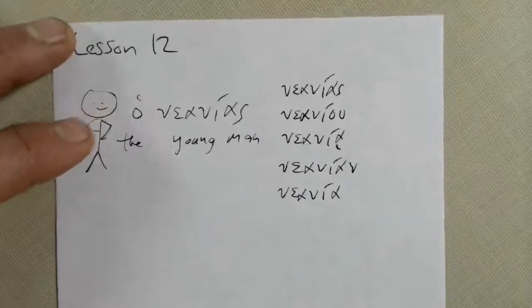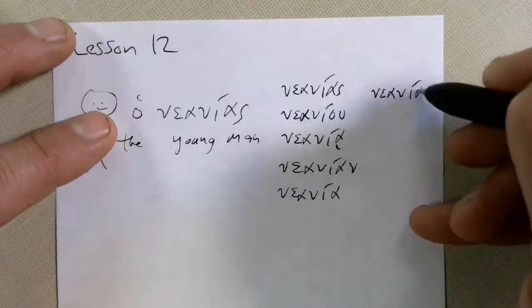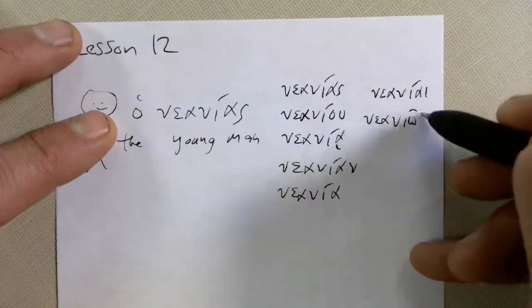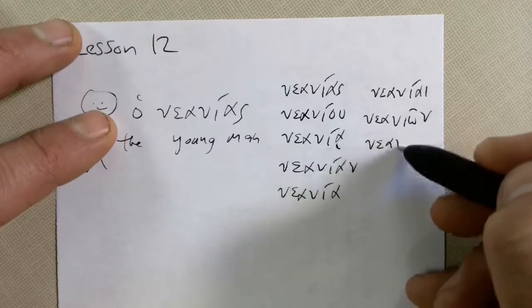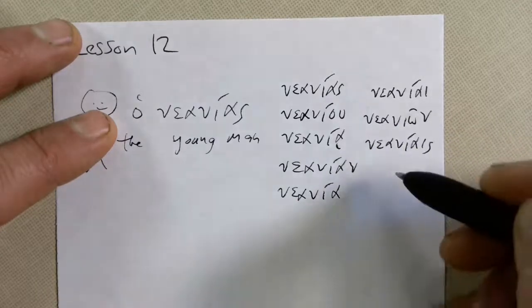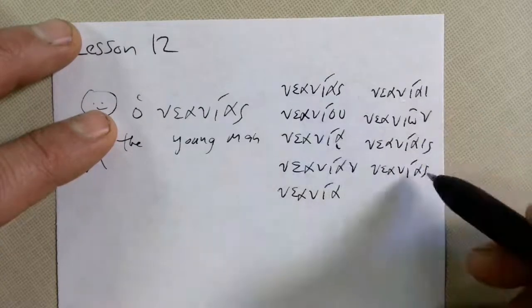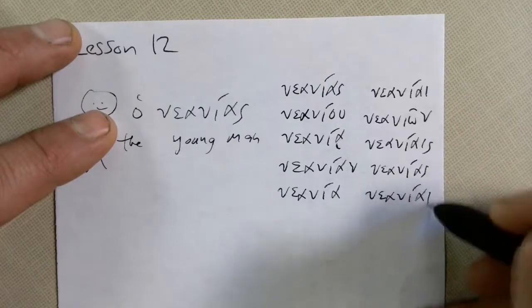Now the plurals, you want the plurals don't you? Those are exactly the same. Naniya, Naniyan, Naniyan, Naniyas, Naniyas, Naniyas, two ASs, and Naniya.